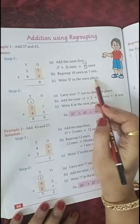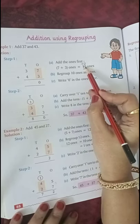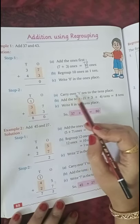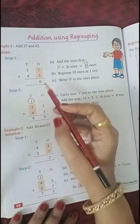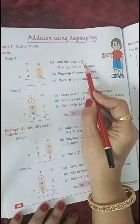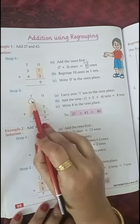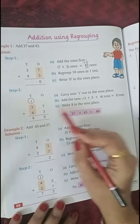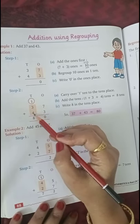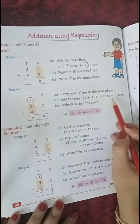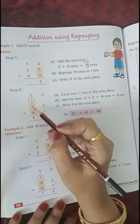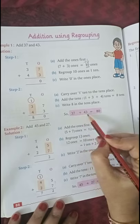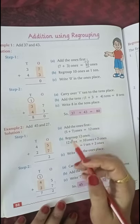First step is over. Regroup 10 as 1 ten, write 0 in the ones place. 0 is already written here. Now step number 2: carry over 1 ten to the tens place. This 1 will go as carry. Then add the tens. There are 3 numbers in tens: 1, 3, 4. 1 plus 3 plus 4 tens equals 8 tens. 1 plus 3 is 4, 4 plus 4 is 8. Write 8 in the tens place. So 37 plus 43 equals 80. Clear?